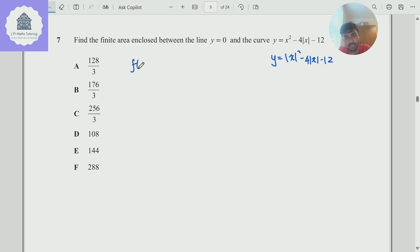And so what do I mean by this? Well, if I had the function f of x, which is x squared minus 4x minus 12, this thing here would be precisely f of modulus x. Now, this is useful when I think about the sketch I'm going to draw.